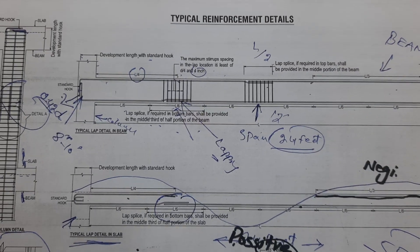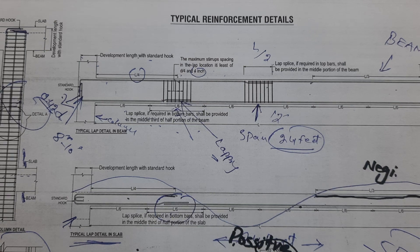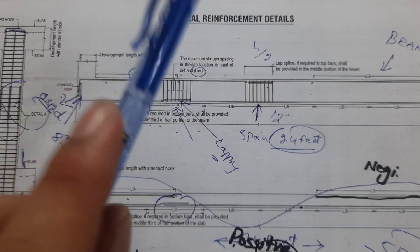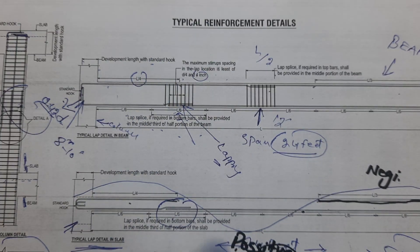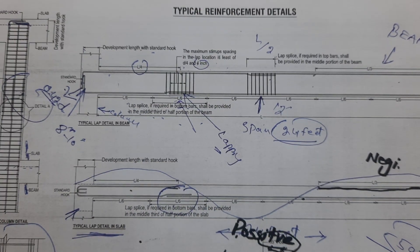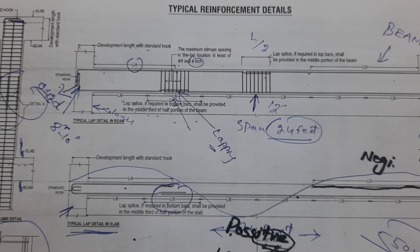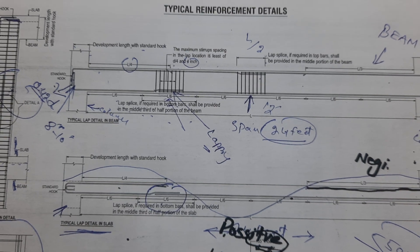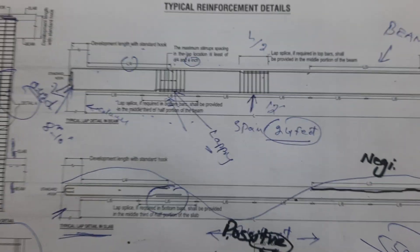This was a short video to guide you on some technical terms for the steel structure design of beams, columns, and slabs. Thanks for watching — see you in the next video. Goodbye.